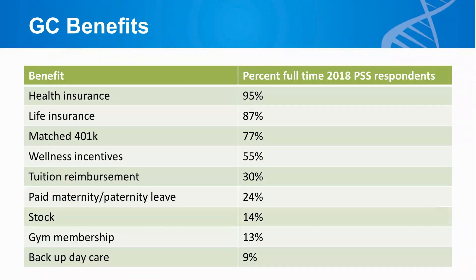Looking at the 2018 Professional Status Survey data, GCs are certainly receiving a variety of ancillary benefits. In general, large companies may be able to provide more robust healthcare plans, other insurance plans, and retirement savings programs simply because they have more employees and are able to get better rates. Startups, however, may offer more creative benefits — like bringing in lunch and even dinner every day for employees, or having pet-friendly offices.